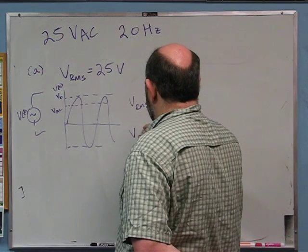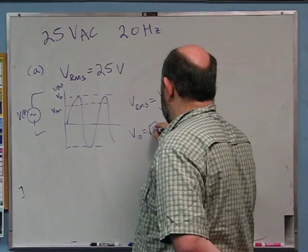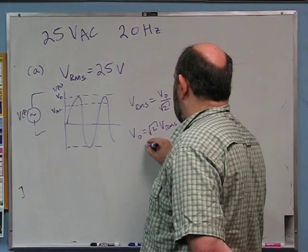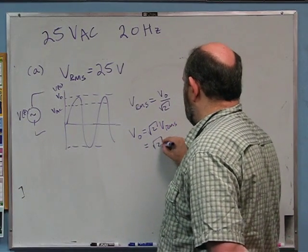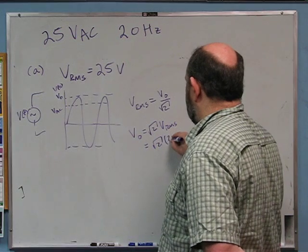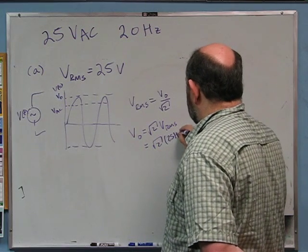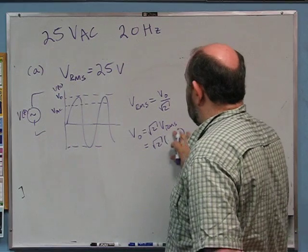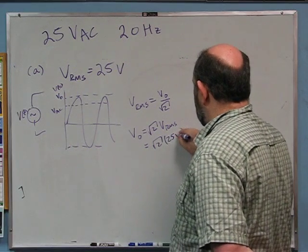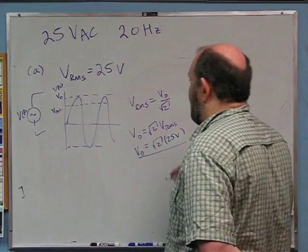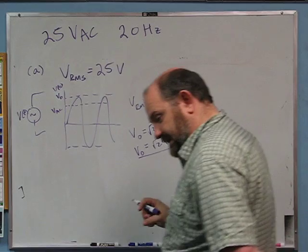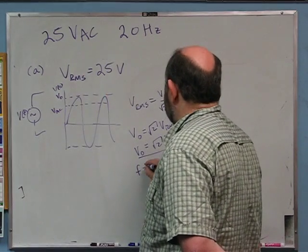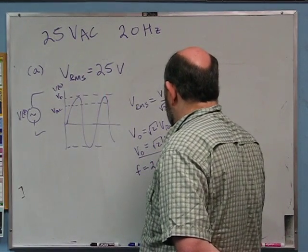So V_naught, the amplitude, is just going to be root 2 times V_RMS. That's going to be root 2 times 25 volts. We also need the frequency — that's easy, 20 Hertz, we already have that. And we need the angular frequency.